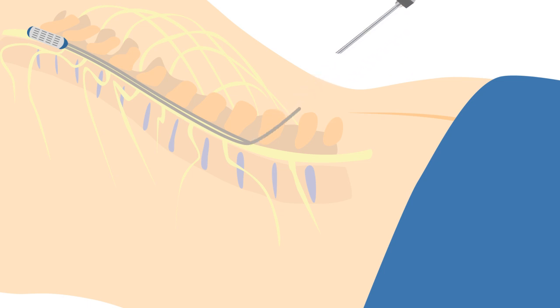Often, two electrodes are inserted, with the ends having what's called a paddle lead to allow for more programming options. A real-time x-ray machine known as fluoroscopy confirms the accurate placement.